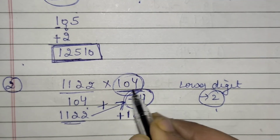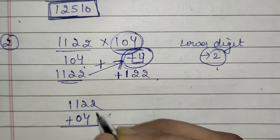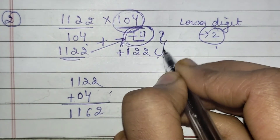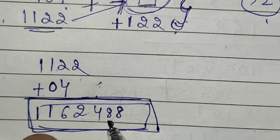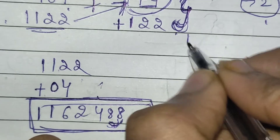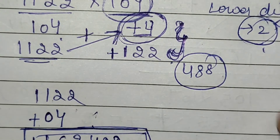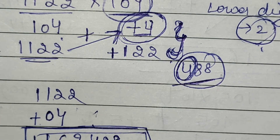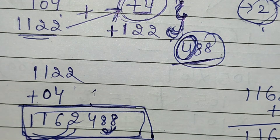After the addition you get 1162 as the first part. Now do the multiplication: 4 into 122 gives 488. But only 2 digits are allowed at the last place and I am getting 3 digits. So the extra digit 4 is carried over and added to 1162, giving 1166, and the remaining part is 88. So the answer is 116688.